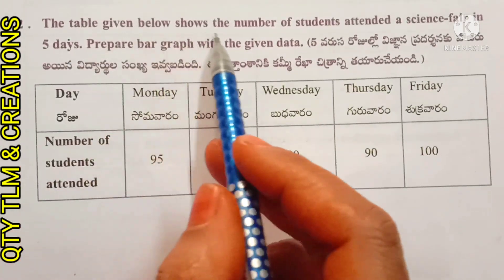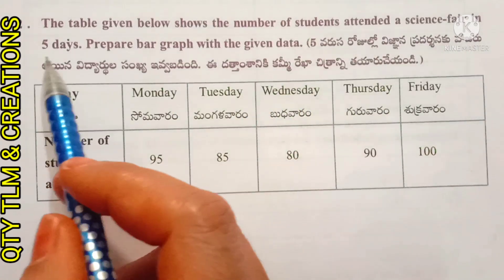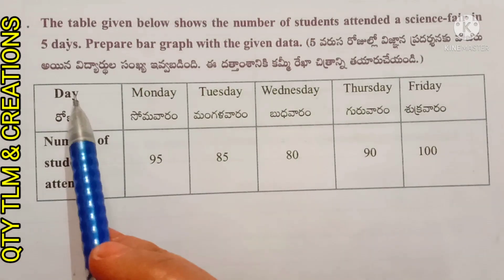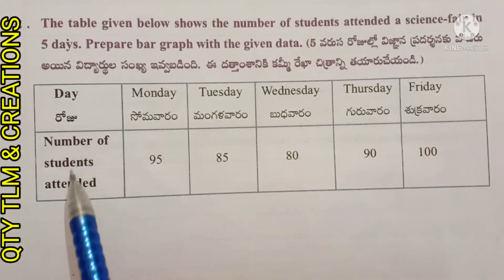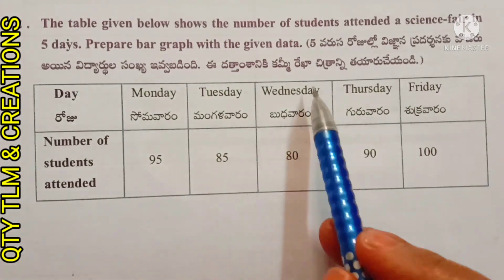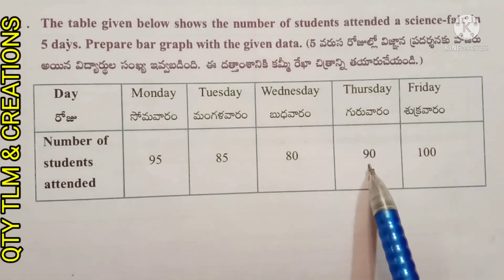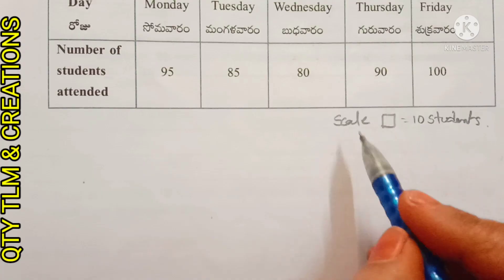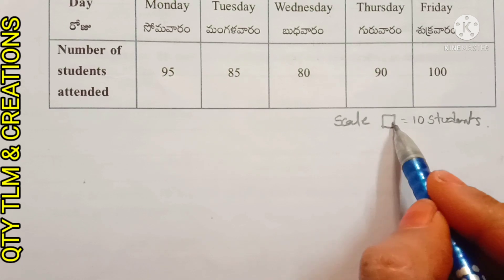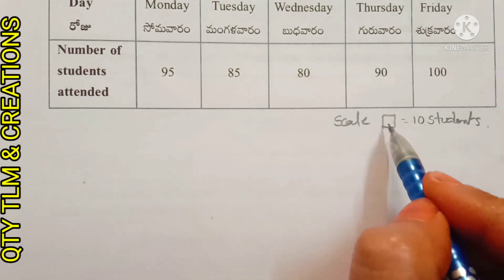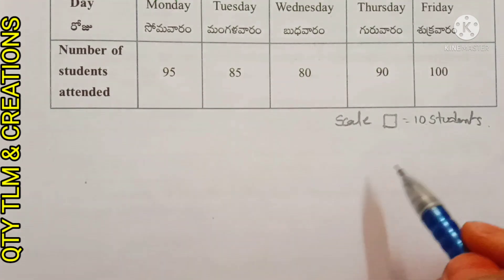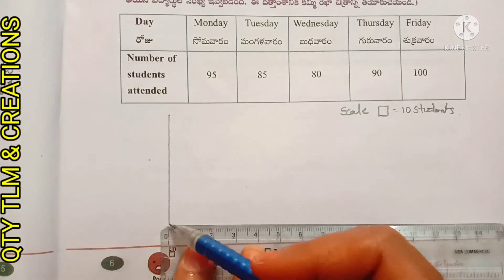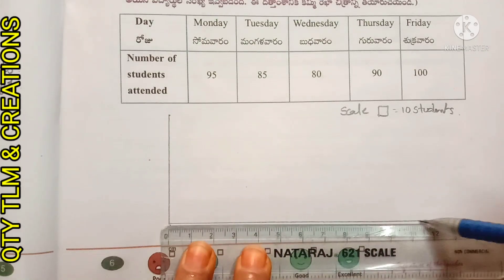The table given below shows the number of students who attended a science fair in five days. Prepare a bar graph with the given data. Monday: 95 students, Tuesday: 85 students, Wednesday: 85 students, Thursday: 90 students, Friday: 100 students. Here, one box represents ten students.